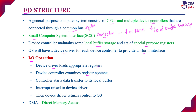Once the device controller examines the register contents, it will start the transfer of data from the device to its local buffer. Once the data transfer is complete, the device controller will inform the device driver via interrupt. The device controller will raise an interrupt to the device driver indicating that the data has been transferred. The device driver will then return control to the operating system, along with status information.